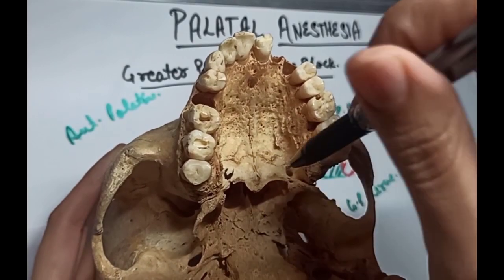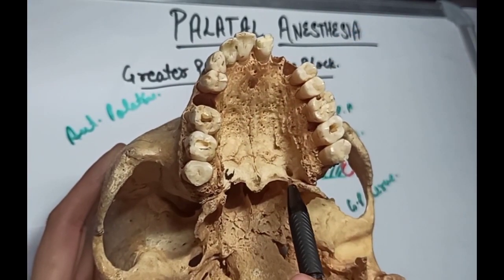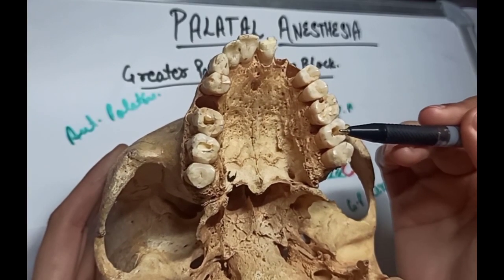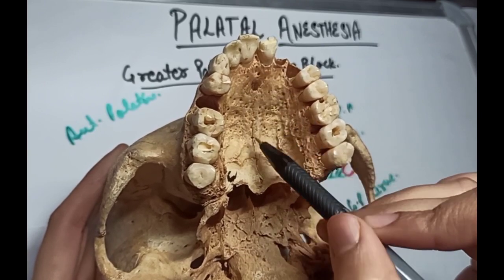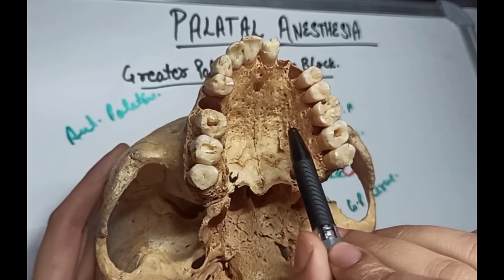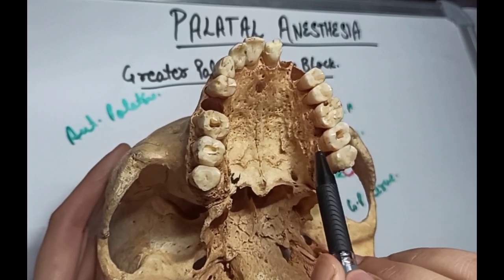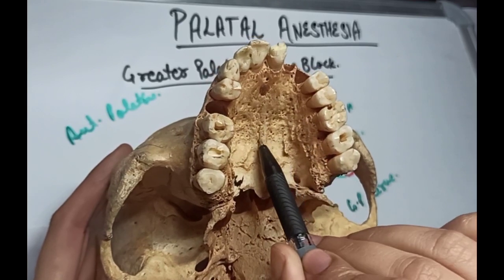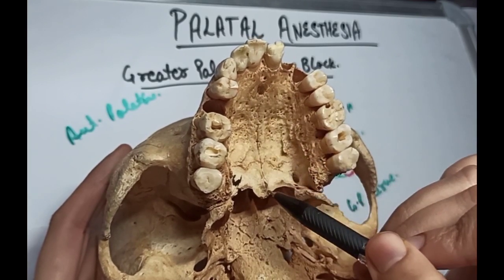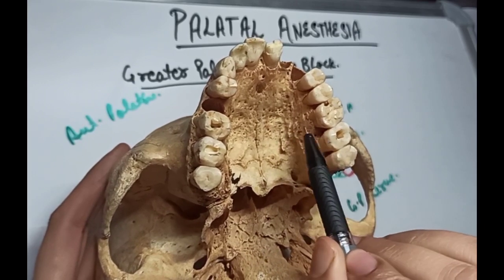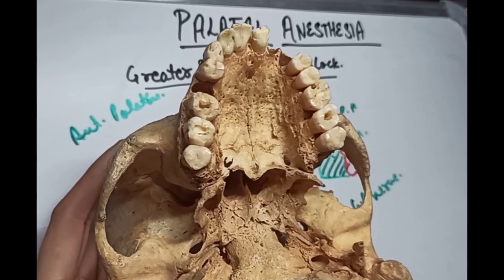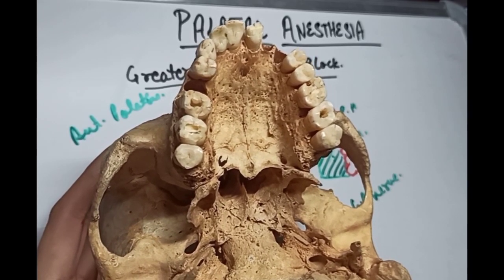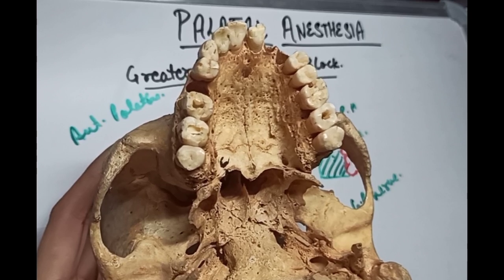Now let's see the anatomical landmarks for the greater palatine nerve block. The landmarks are: first, the greater palatine foramen; the maxillary second and third molars; the palatal gingival margins of the maxillary second and third molars; the midline of the hard palate; and the line approximately one centimeter from the palatal gingival margins of the maxillary molar teeth to the midline of the palate. The target area is the greater palatine nerve as it passes anteriorly between the soft tissues and the bone of the hard palate.